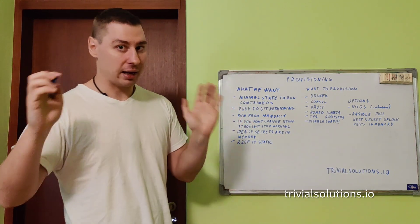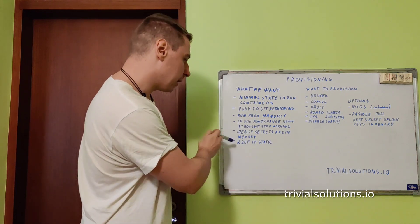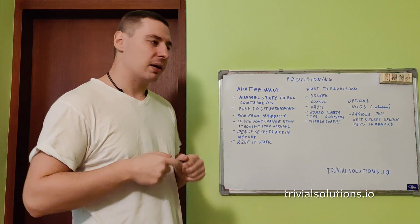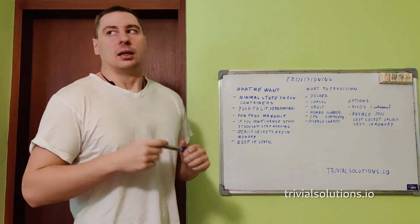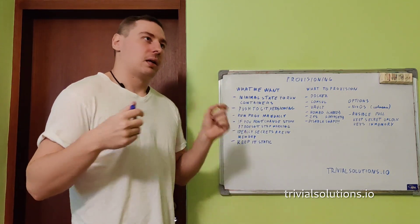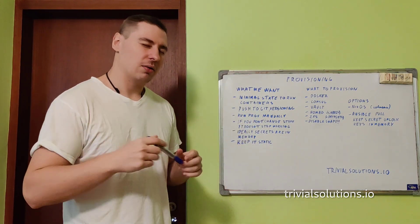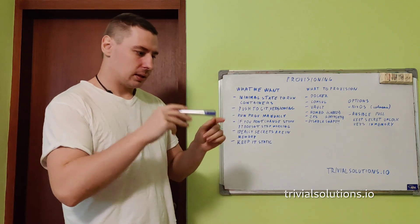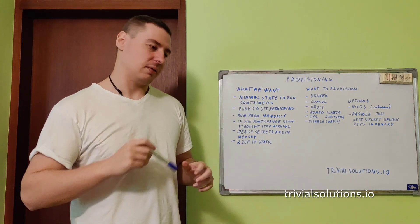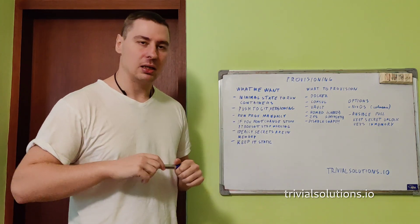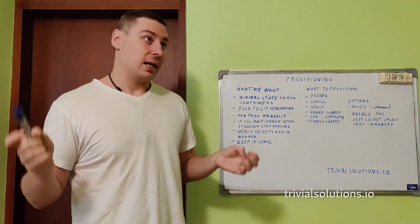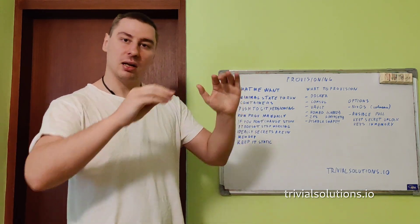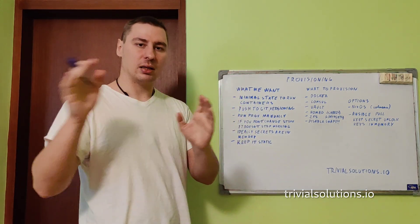Ideally secrets are in memory. When we provision secrets, with Ansible there's this key that unlocks the rest of the secrets. I usually use one master key that decrypts the configs.